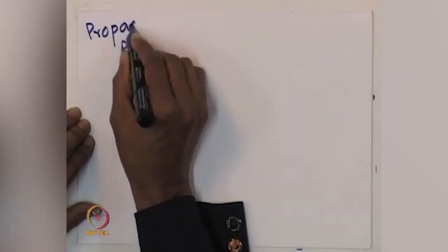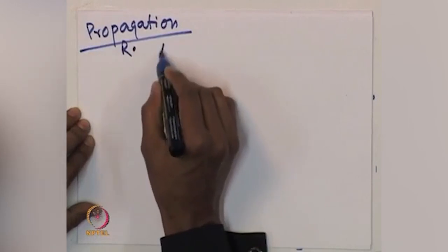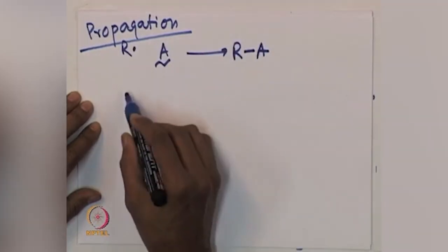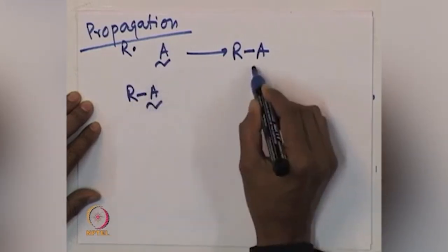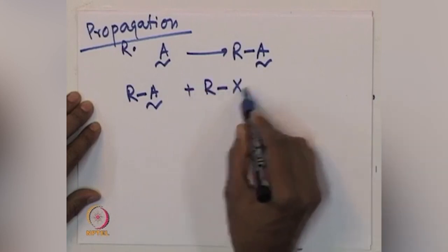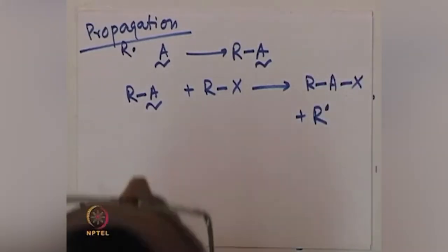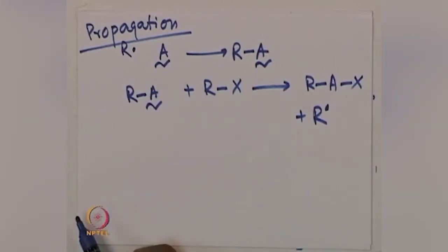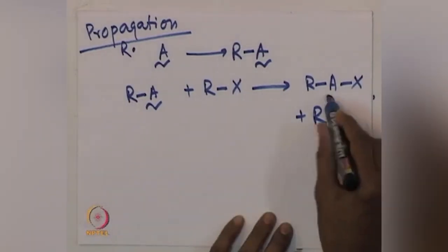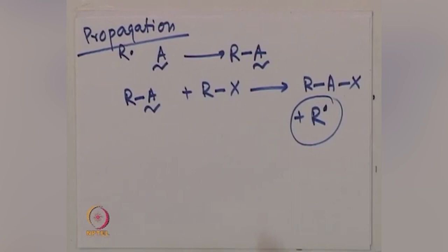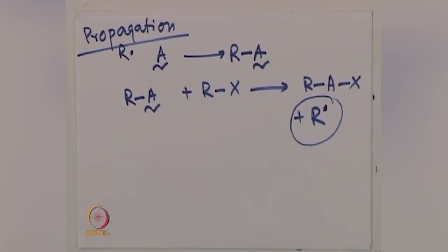The propagation for this reaction will involve the R radical reacting with the initiator to give R-A. Then R-A reacts with Rx to give R-A-X species plus R radical — that is how the reaction propagates. Once you have an initiator to start the radical mechanism, the reaction takes care of itself because the next step generates an R radical that reacts with A again to propagate the reaction in a stepwise manner.